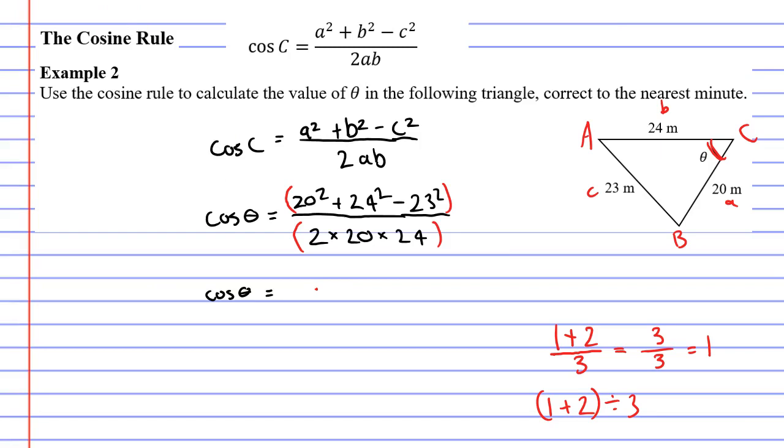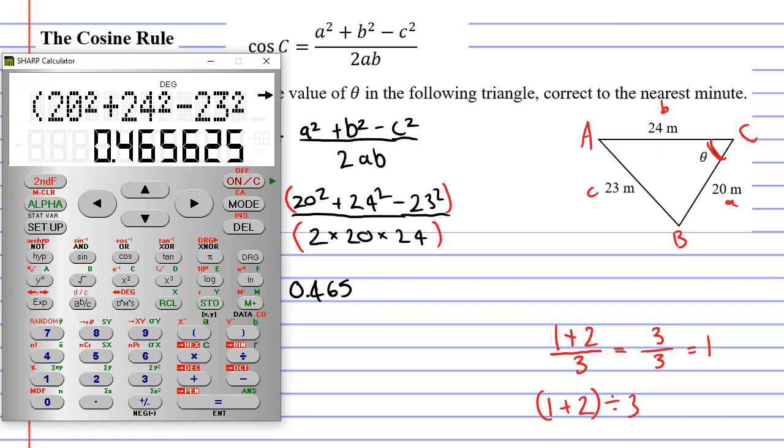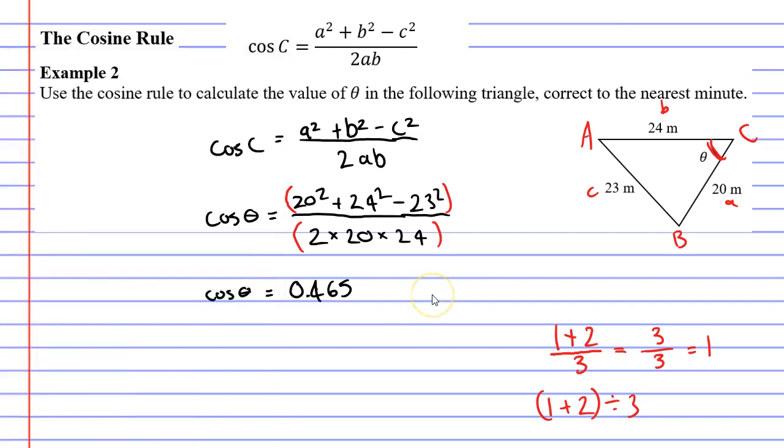So we have 0.465625. Notice I haven't really rounded it yet. I haven't rounded it because I haven't got to my final solution yet.